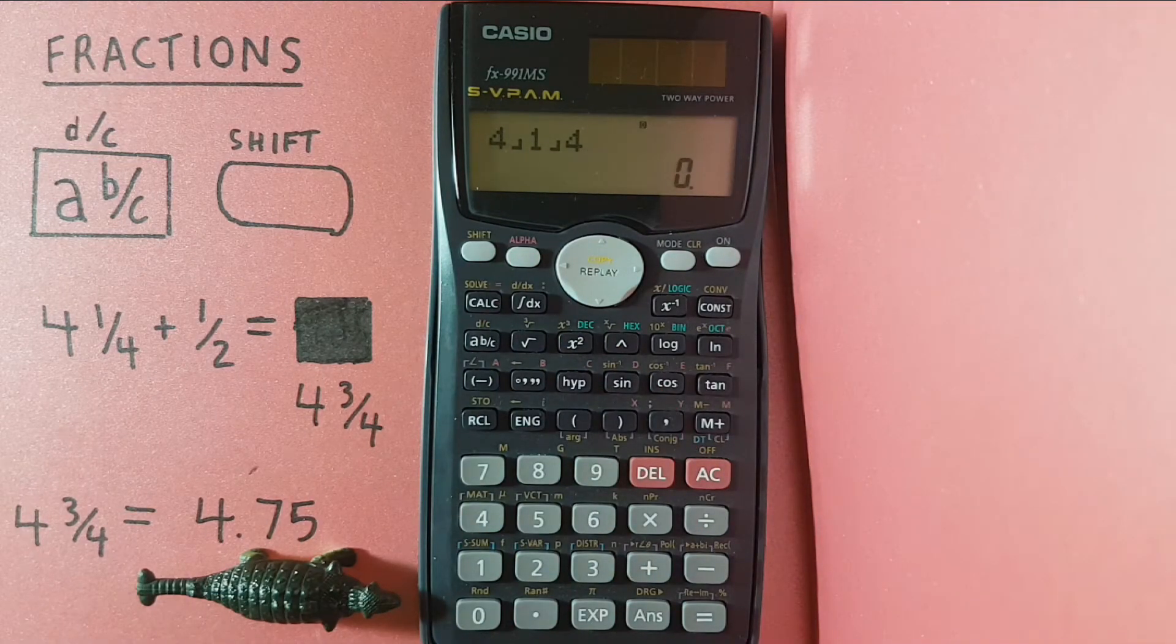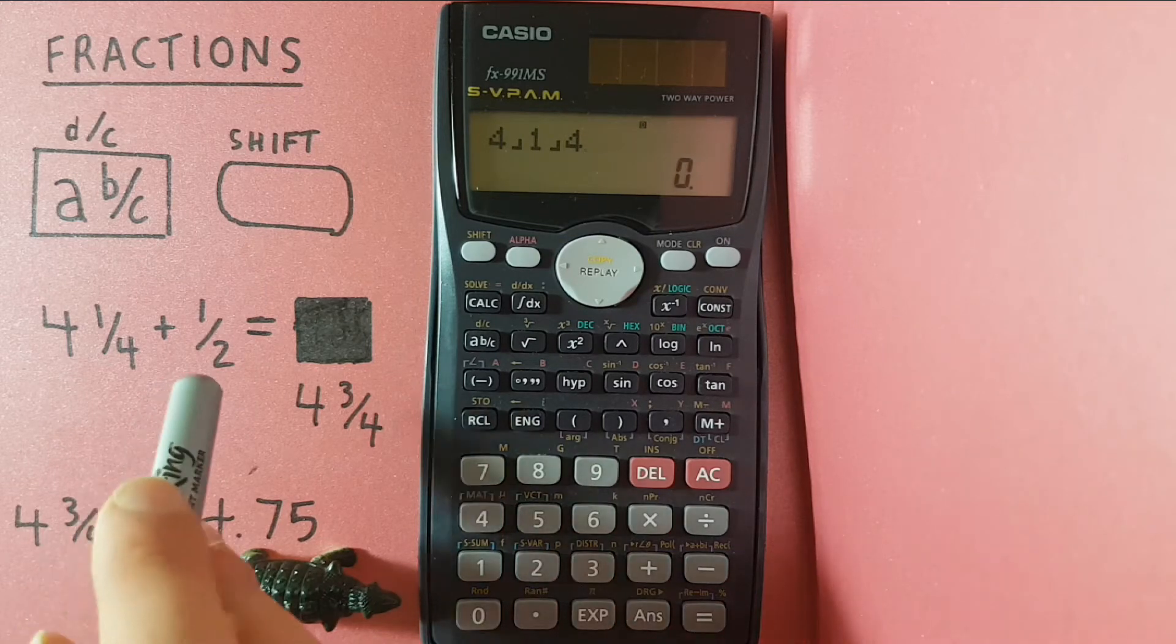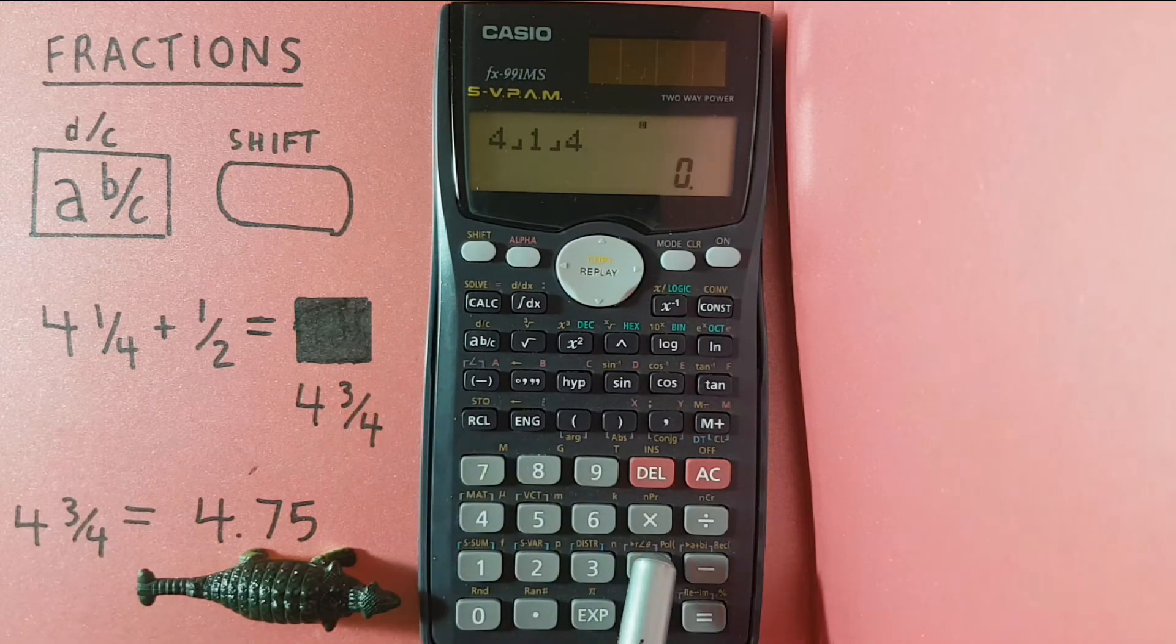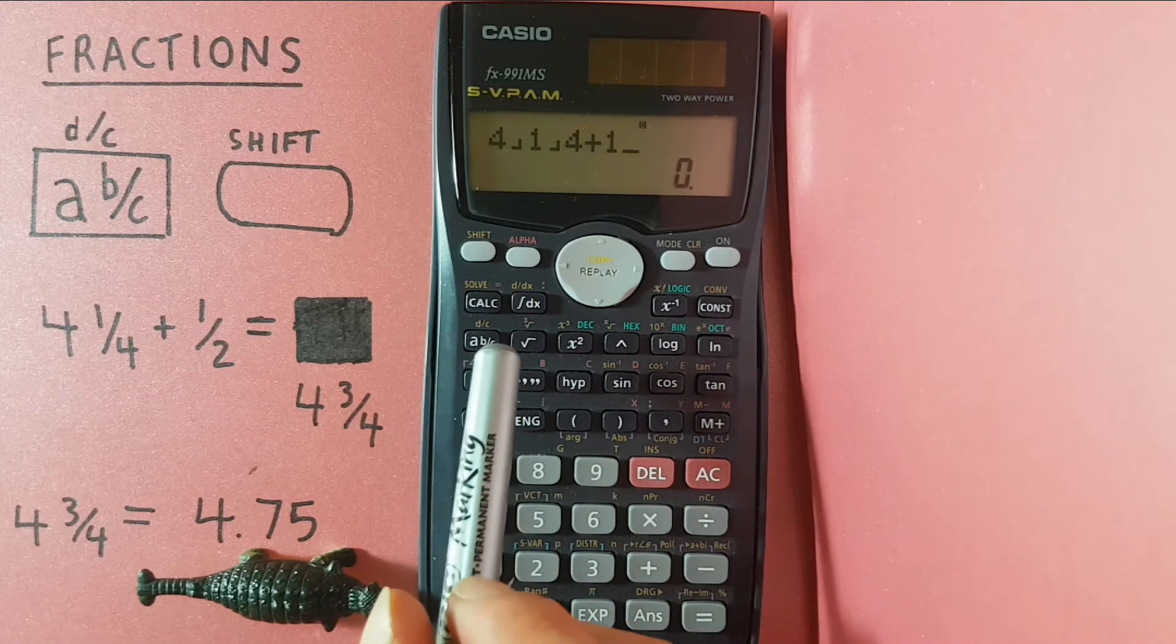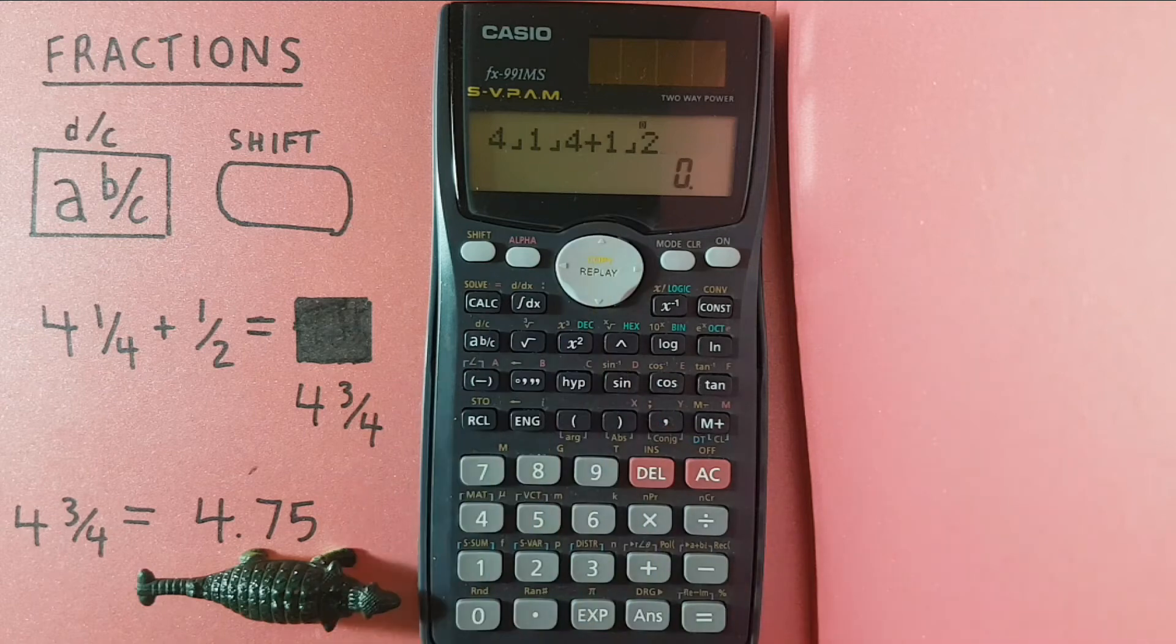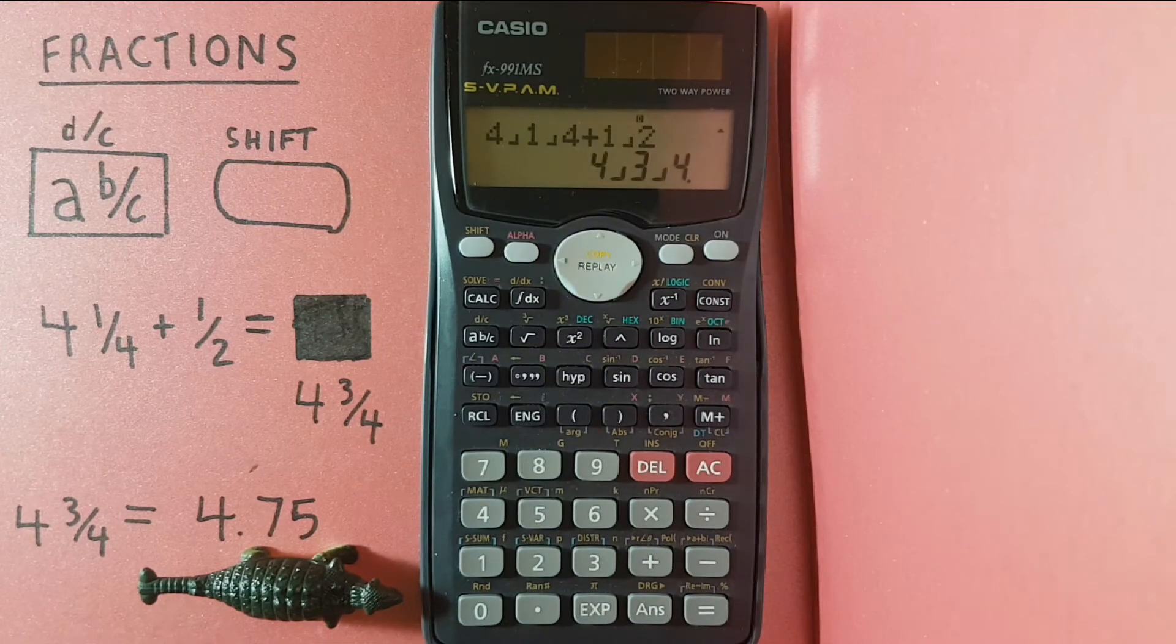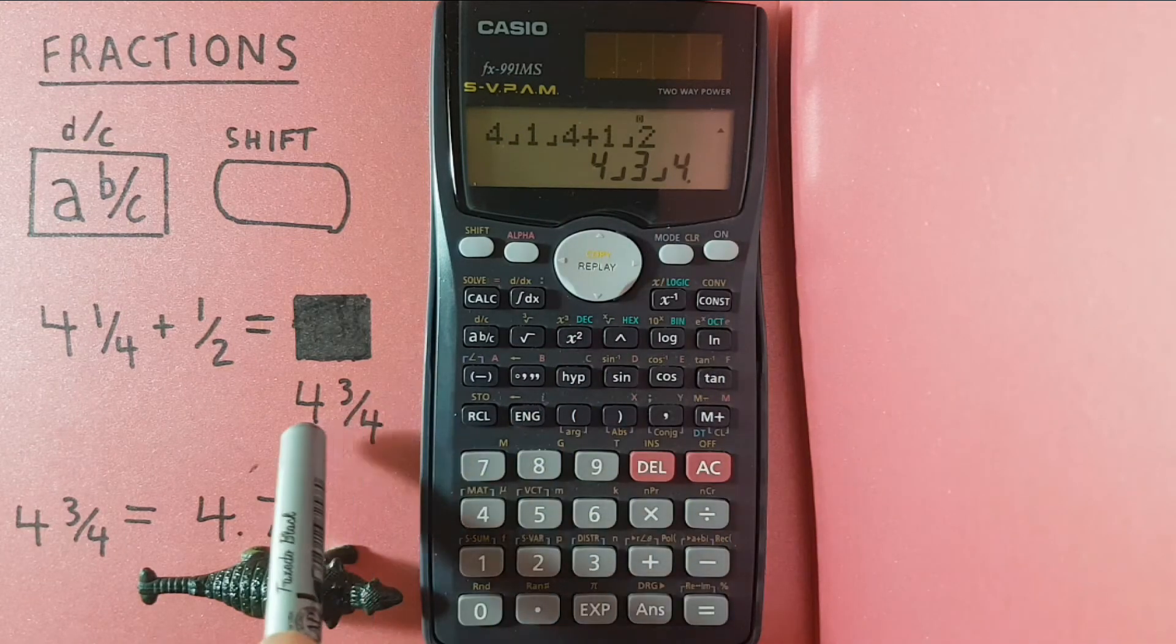We can add fractions by adding them the way we would add any other number. So if we wanted to add 1 half, we would hit the plus and then 1, A B over C, 2. So this is now 1 half, and then the equals key, and this gives us 4 and 3 quarters right here.